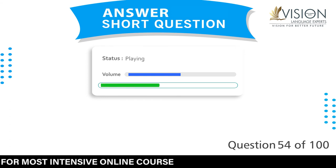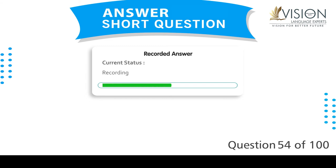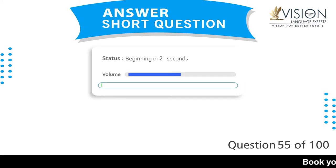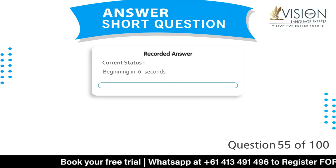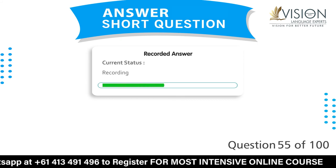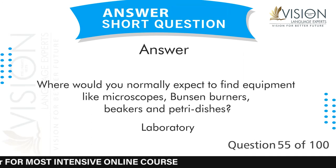What do you call a book where you arrange all of your photos together? Album. Where would you normally expect to find equipment like microscopes, Bunsen burners, beakers, and petri dishes? Laboratory.